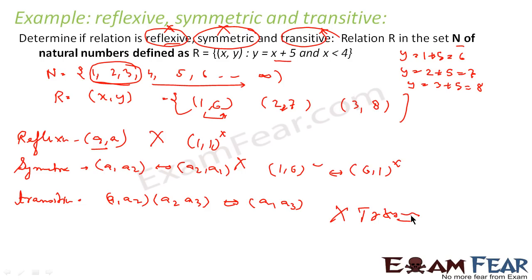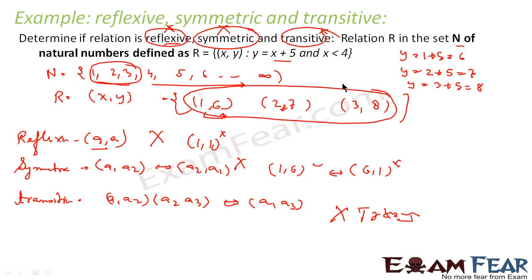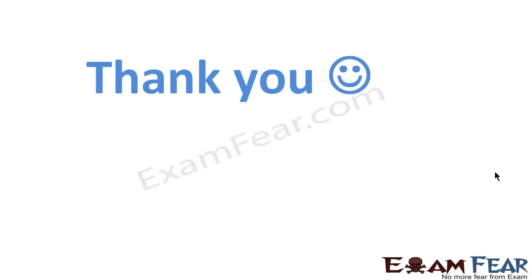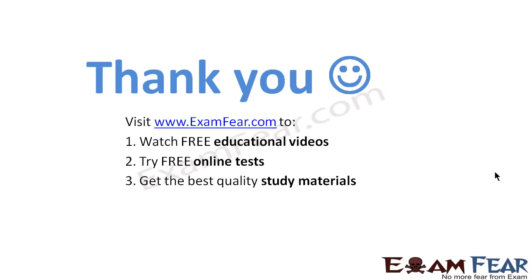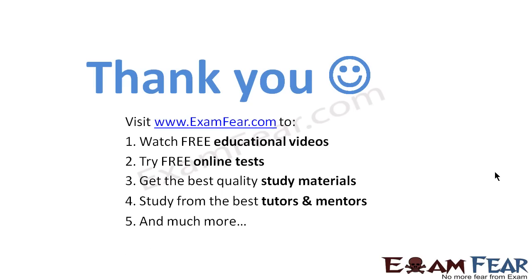So what we have done is very simple. The first thing we did was get the elements in the relation, and once we have the elements, we can easily find whether it is reflexive, symmetric, and transitive. Thank you. Visit examfear.com to watch free educational videos, try free online tests, get the best quality study materials, and study from the best tutors and mentors. Thanks once again.